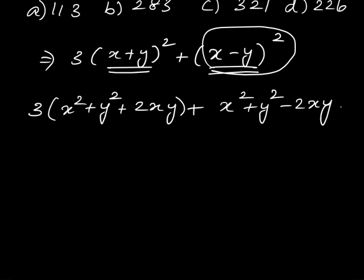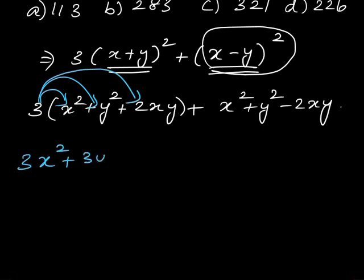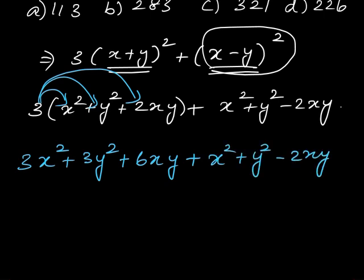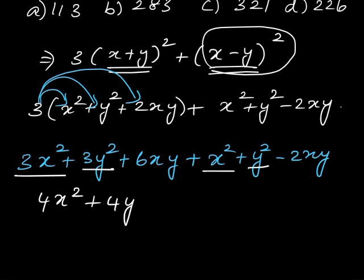Multiply 3 inside the terms: we get 3x squared plus 3y squared plus 6xy plus x squared plus y squared minus 2xy. Now add the like terms: 3x squared plus x squared gives 4x squared, 3y squared plus y squared is 4y squared, plus 6xy minus 2xy gives 4xy.